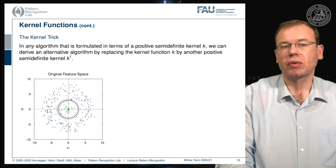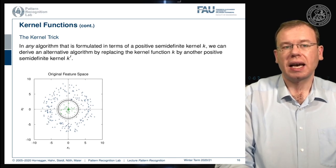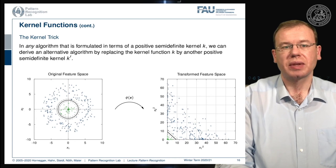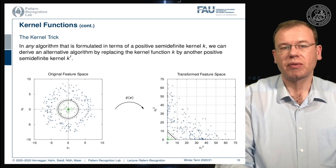Here we see the original feature space, and we apply our feature transform, and this is our transformed feature space. So the kernel trick. And now in this transformed feature space, we have these very nice properties of being linearly separable.